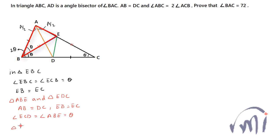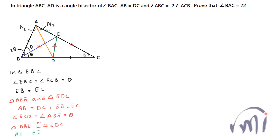That means triangle ABE is congruent to triangle EDC. Therefore their third sides are equal: AE from triangle ABE equals ED from triangle EDC. So AE is equal to ED. Also, angle EDC will be equal to angle EAB, and both of them are equal to angle A.